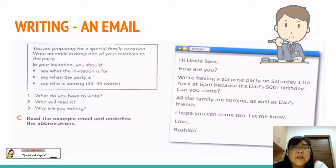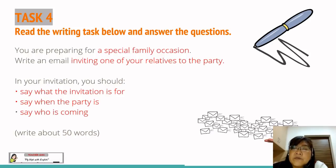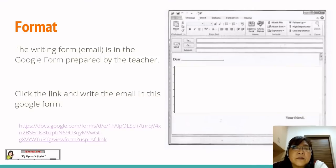Now let's move on to the writing lesson. Pupils are going to write an email. This is a question from the textbook. Read the writing task below and answer the questions. You are preparing for a special family occasion. Write an email inviting one of your relatives to the party. In your invitation, you should: number one, say what the invitation is for; second, say when the party is; and three, say who is coming. Write about 50 words.